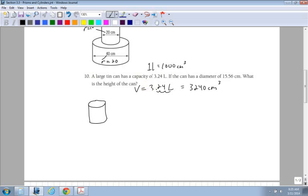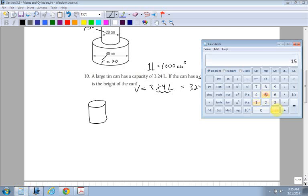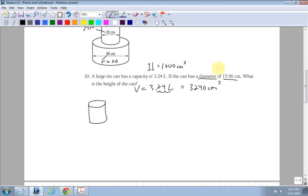Now, the can has a diameter. Remember, diameter, we need radius of 15.56. So I could take 15.56 and divide it by 2 for my radius, which is 7.78. Good. Now I have all the pieces. What is the height of the can? So this time, my formula, volume equals pi r squared times h, so the area of the base times the height. I don't have the height this time. I'm going to be solving for height. But I have the volume.